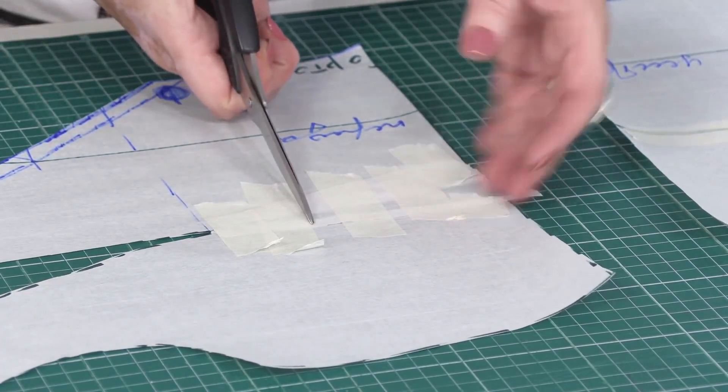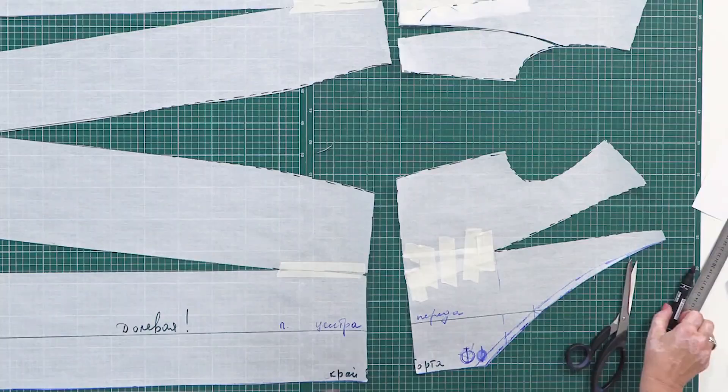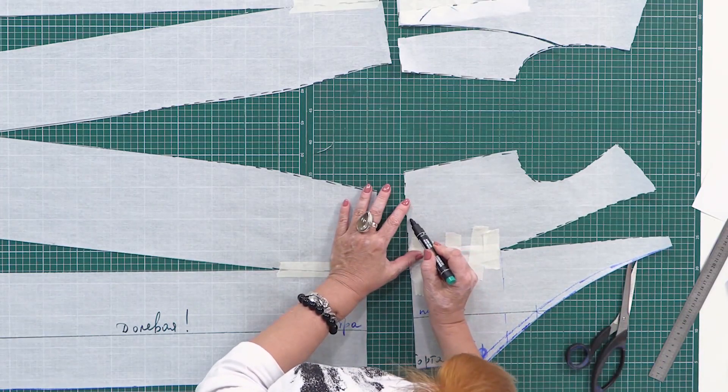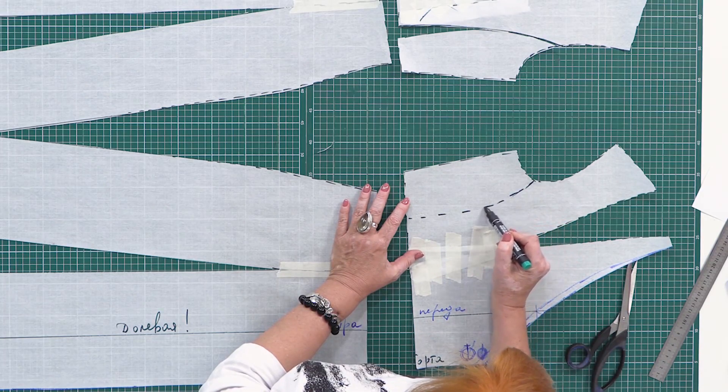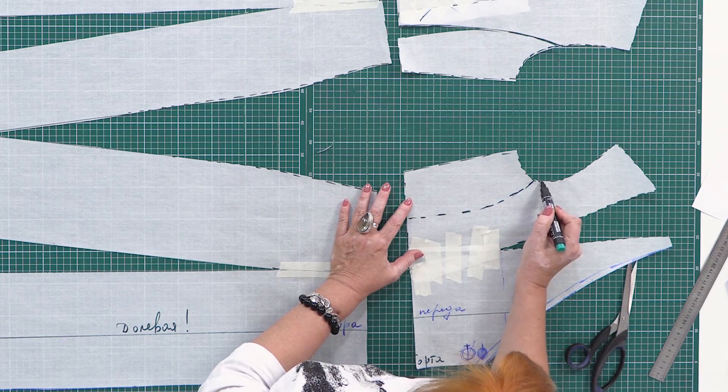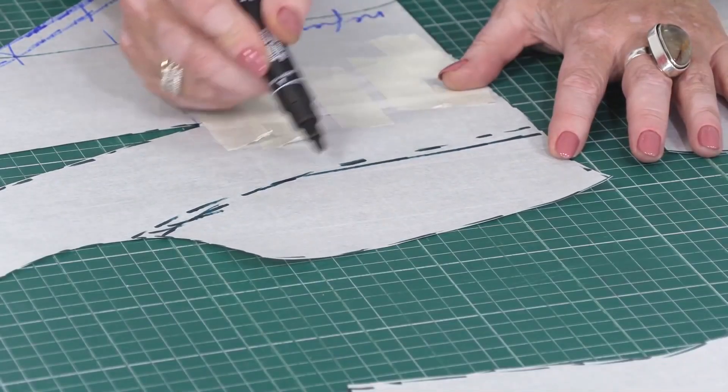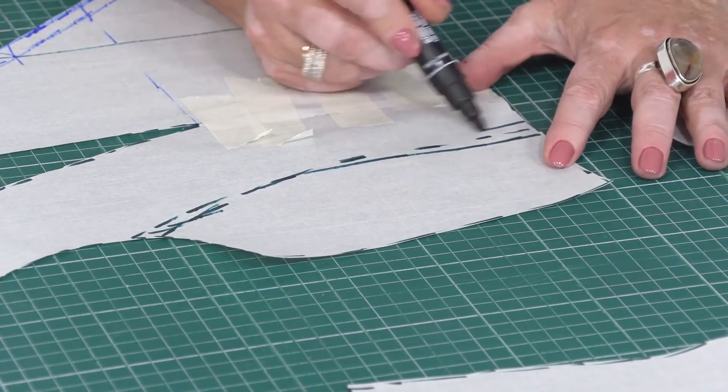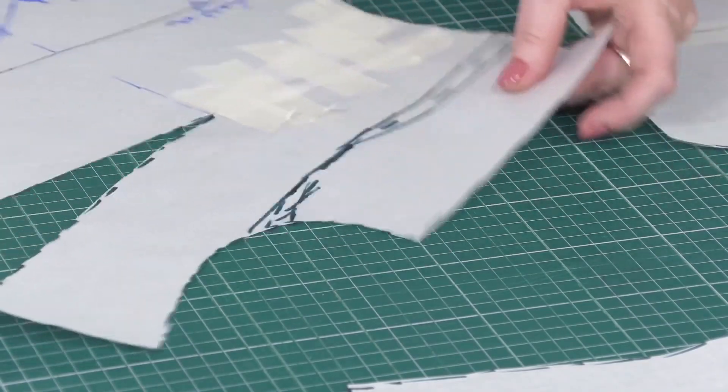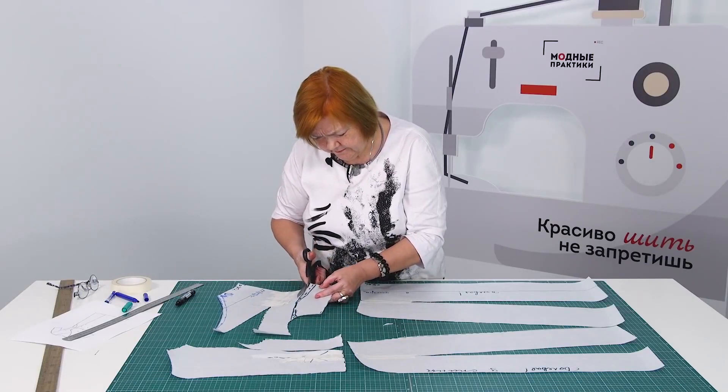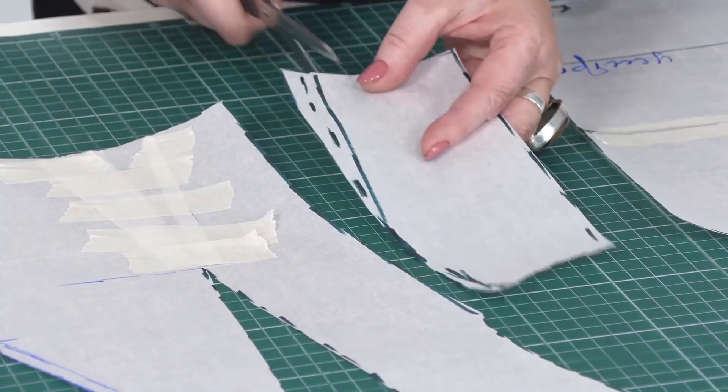Next, I need to move the opening of this dart to the princess seam. The same way as I did on the back. I'm drawing the princess seam or the side detail. And the dart opening. The opening shouldn't be changed. That's it.